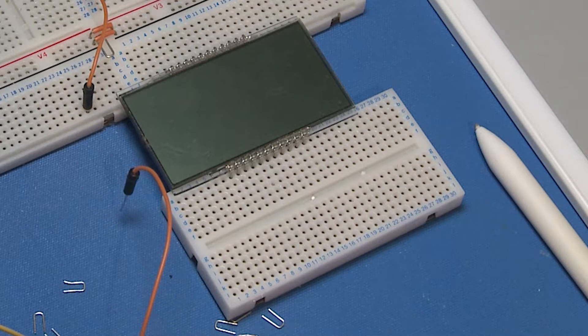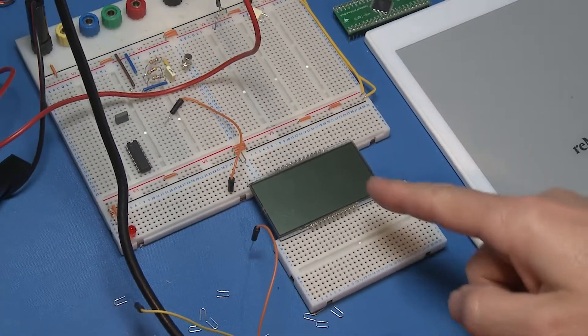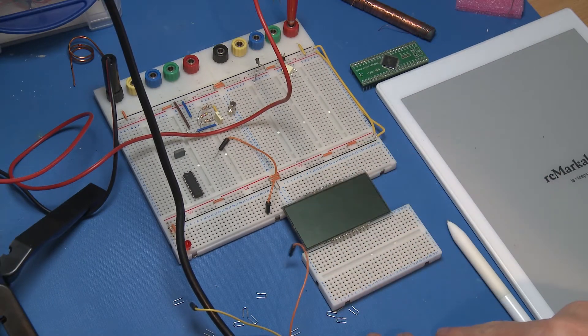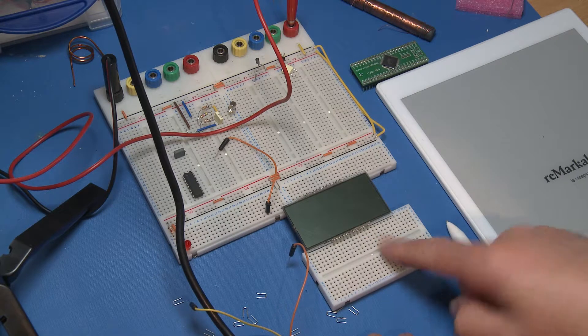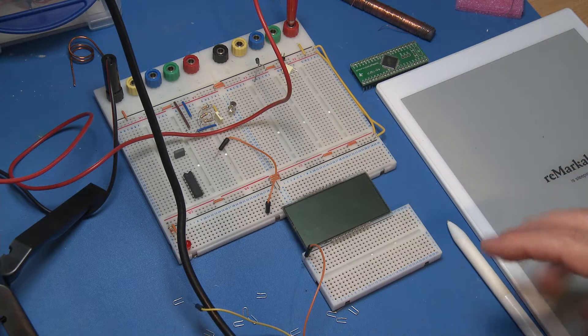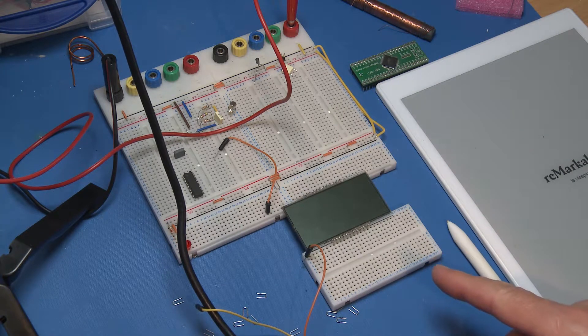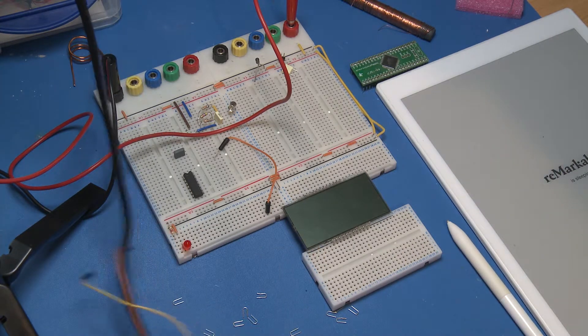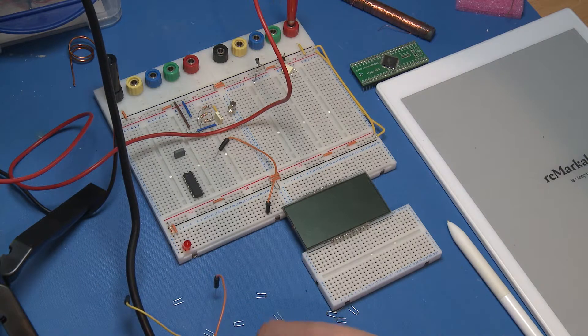The next thing I'm going to do is I'm going to start shorting what I think are all the segments together and shorting all the commons together. Because that way I can get the whole display to come up, and when I've got the whole display to come up I can see exactly what's on there and then I can start mapping that out. I'll just put this into fast motion.